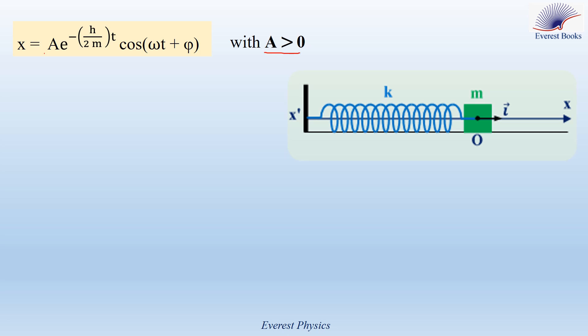Now, a is a constant and it is positive. h is the damping coefficient, m is the mass of the block, t is the time, ω is the angular frequency of the oscillations — and take into account that it is not ω₀, it's not the natural angular frequency because here we are studying damped oscillations. φ is the initial phase angle.